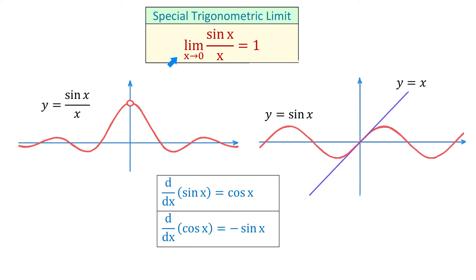This limit is very important for proving the derivatives of trigonometric functions, like the derivative of sine and the derivative of cosine. The function sin(x) over x also has a ton of applications in science and engineering — for example, it is used in studying optics, signal processing, electrical engineering, computer graphics, probability, and statistics.